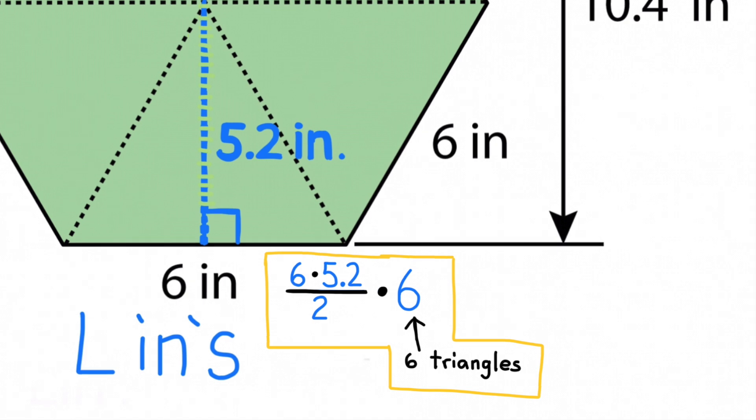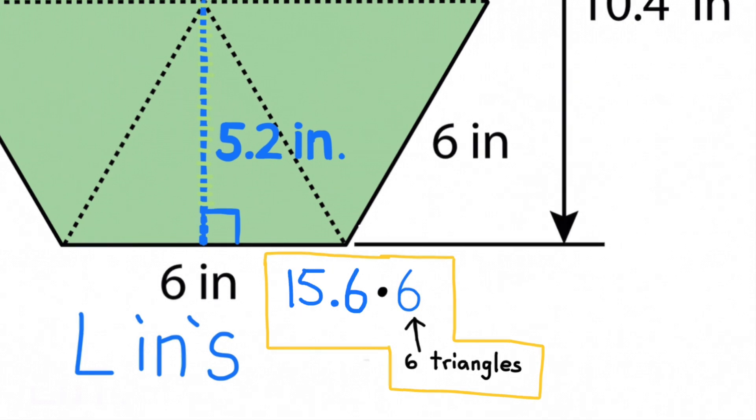The base is 6, and half of the base would be 3. So half the base times the height would be 3 times 5.2. 3 times 5 is 15, and 3 times 0.2 is 0.6. The area of each of the triangles would be 15.6 inches.